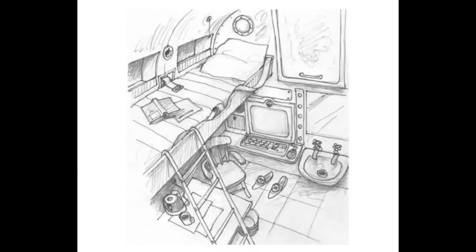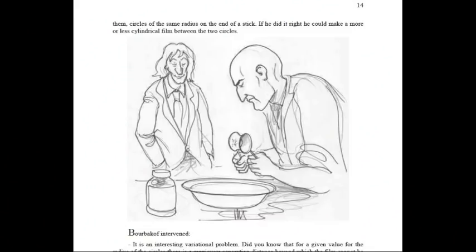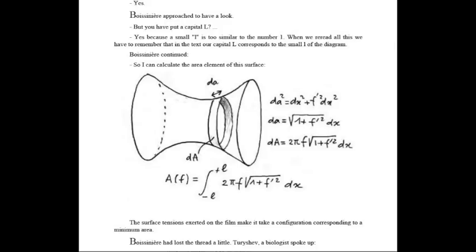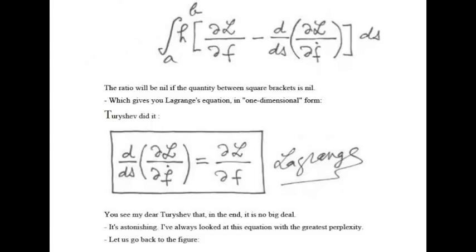There, a French man named Hubert de la Boissiniere is building a craft that will take people to distant stars. You will discover the story in the joined PDF file. Here you have the cabin of Nikola Bobakov in the craft. Hubert de la Boissiniere is trying to make a soap film between two metallic circles. Bobakov watches it and says, 'Oh, you know, there is a method to determine the equation of the meridian of the film.' 'Could you explain that to us?' 'Yes, I could. Let's have a seminar.'